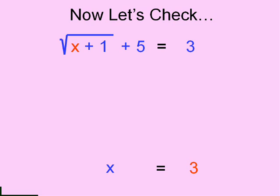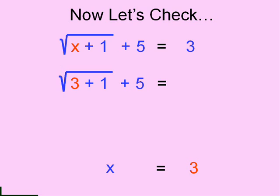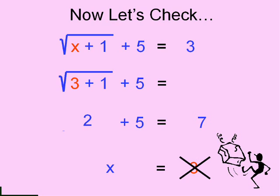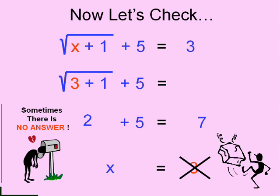Let's check by putting 3 in for x in the original equation. Three plus one is four, and the square root of 4 is 2. Two plus five equals 7. Uh-oh — it didn't work. Sometimes it's not going to work, so make sure you check. What do I write for the answer? Sometimes the answer is that there is no answer. So the answer is no answer — in the software they sometimes want you to write an N.